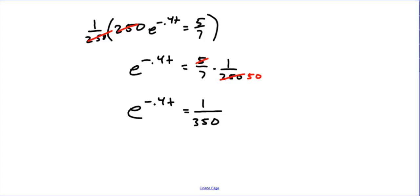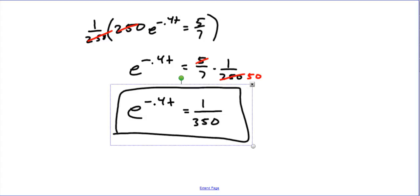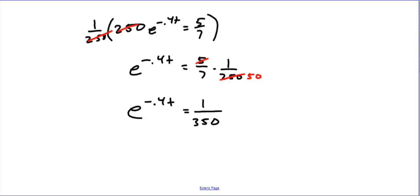So now what we have is e to the negative 0.4t equals 1 over, well, 7 times 50 is going to be 350. And now from here what we're going to do is, now we have a basic exponential problem. In order to solve for an exponent, what we need to do is log both sides because of the inverse property. We're going to natural log both sides.